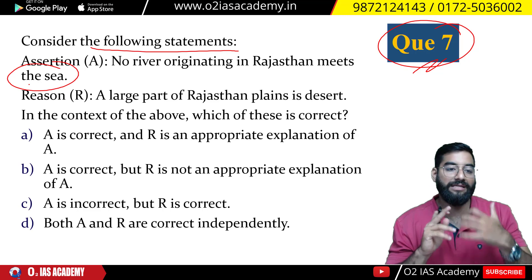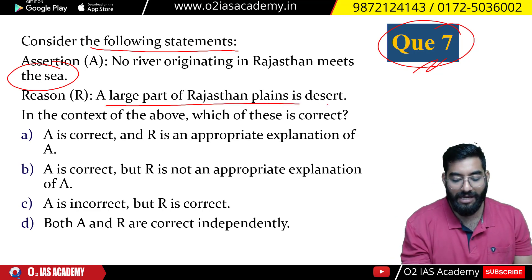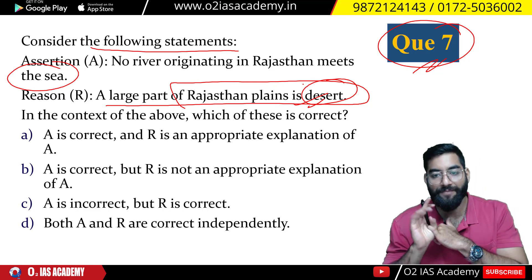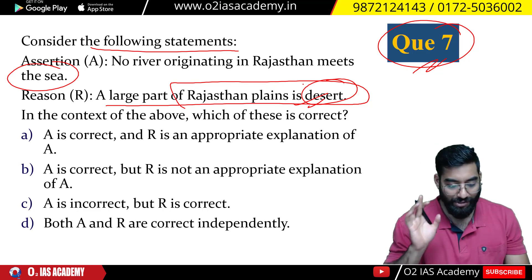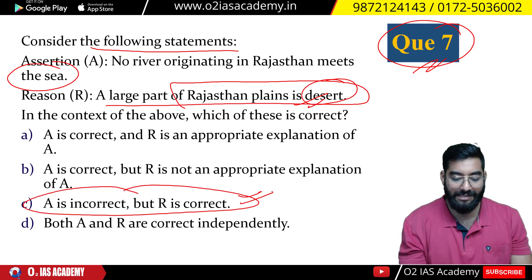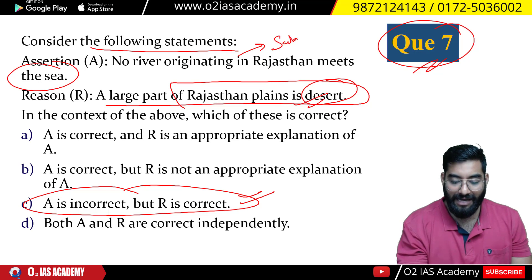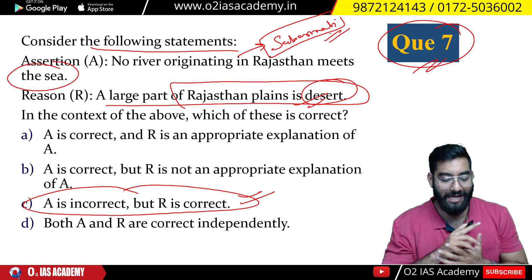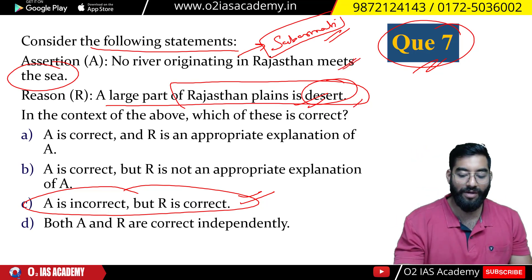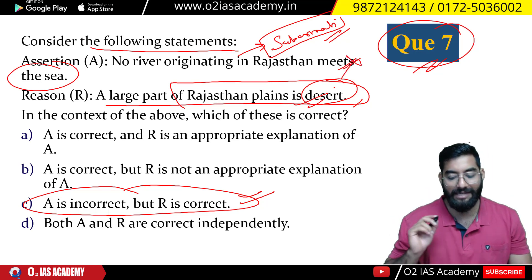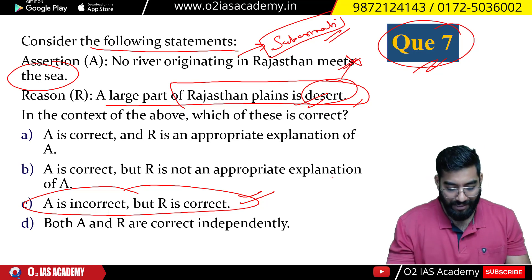In north India — in Rajasthan — no river flows into the sea, because a large part of the Rajasthan plains is desert. Among the options, which statement is correct? One option states there is a river going to the sea, which is incorrect. The second option — most of its plains are desert — is absolutely correct.